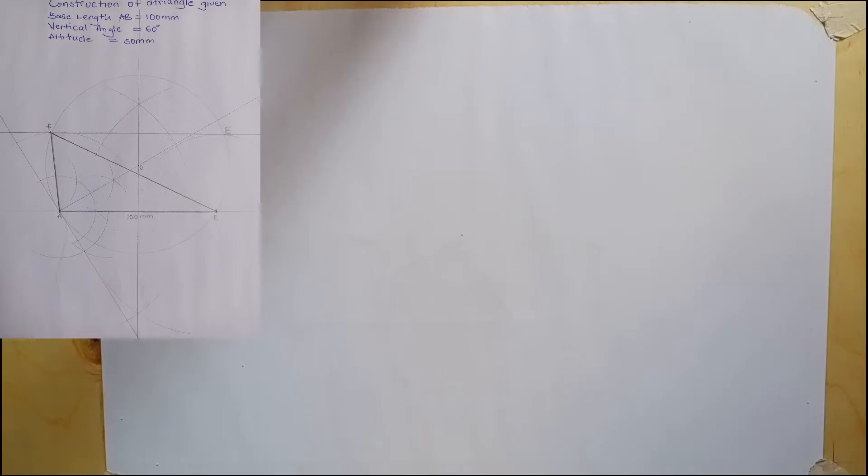Hi everyone, I welcome you back to this channel, Technical Drawing Masterclass. Today we are going to look at the construction of a triangle. In this case, we are being given three conditions: the vertical angle, the altitude, and the base length.